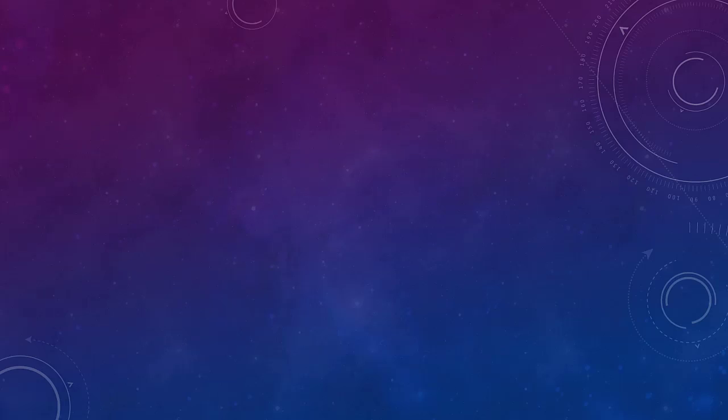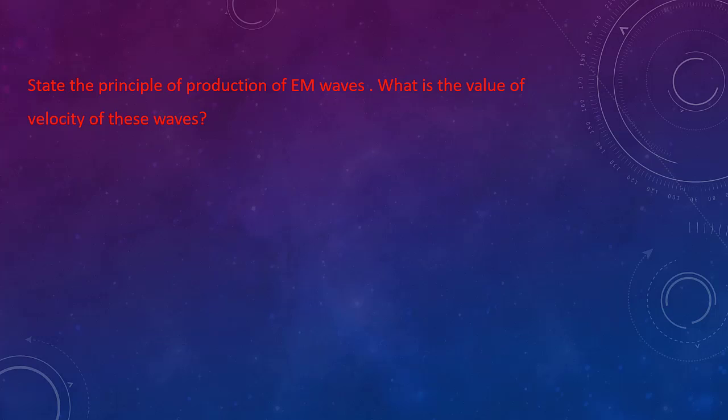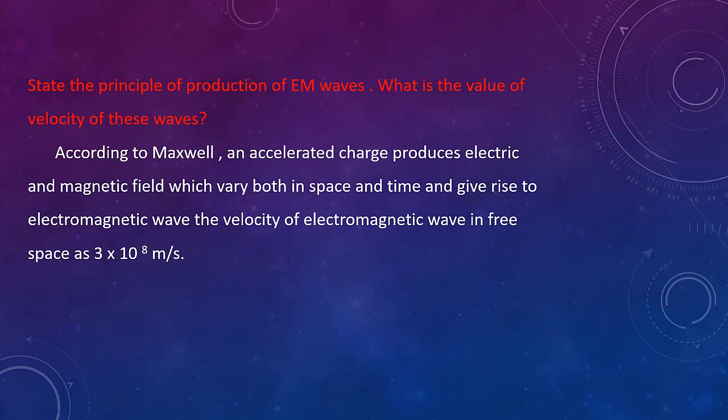The first question is: state the principle of production of electromagnetic waves and what is the value of velocity of these waves? According to Maxwell, accelerated charges produce electric and magnetic fields which vary both in space and time, giving rise to electromagnetic waves. The velocity of electromagnetic waves equals the speed of light, that is 3 × 10⁸ m/s.